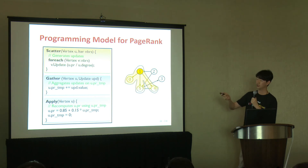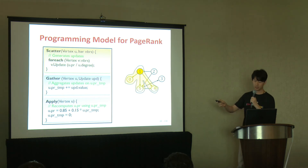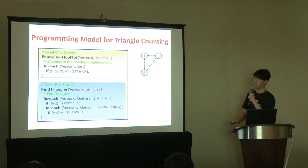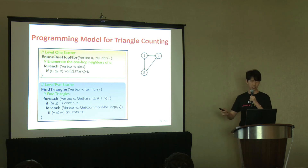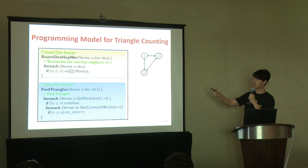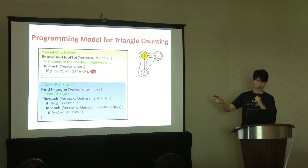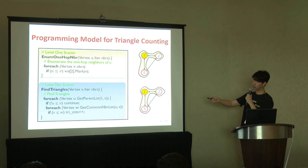To support k larger than 1, we allow users to define a scatter function for each level of walk enumeration, so there are k scatter functions in total. For triangle counting, two scatter functions are defined. The level-1 scatter function, enum_one_hop_neighbor, is invoked for all vertices. Among each one-hop neighbor, it marks the vertices to traverse further.